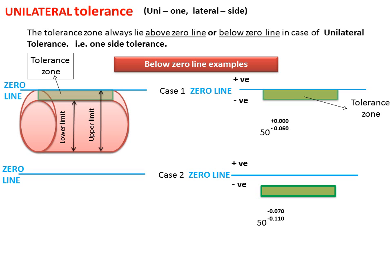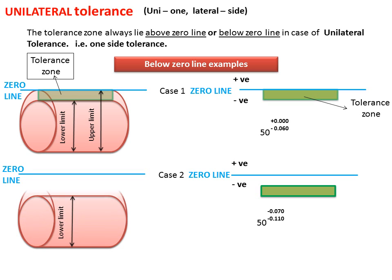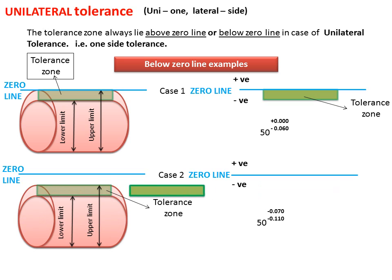Now Case 2 — zero line, this is the lower limit, upper limit, Tolerance Zone. Again you can see the Tolerance Zone is below the zero line, and in this case it is not touching the zero line.